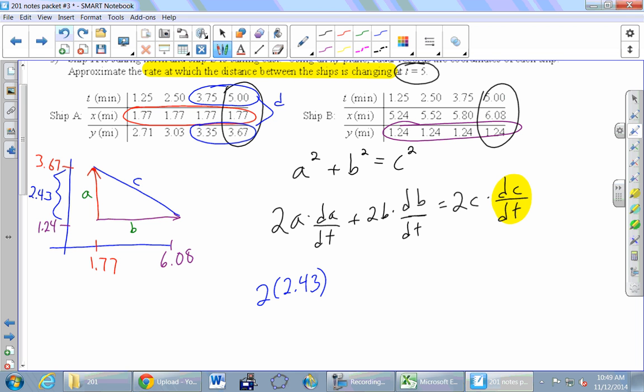So putting these two guys together, we see the dA/dT is, so we're going to take the Ys and subtract them, 3.67 minus 3.35, over, and then we'll take the times and subtract them, 5 minus 3.75. It's not super important to me what the numerical answers are. That's going to be easy. But figuring out what the calculations are that are important, that's the hard part of this problem.